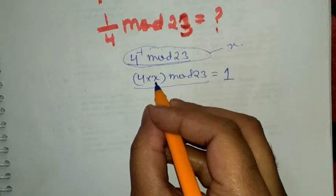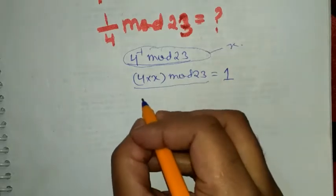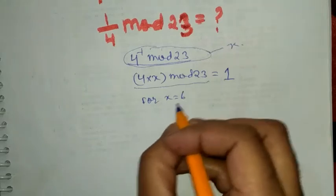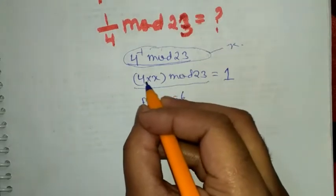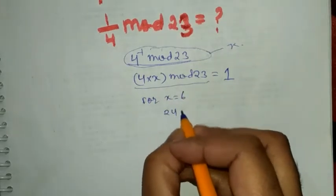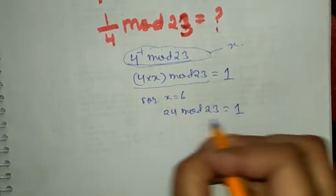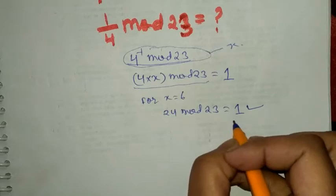So if you put x equals to 6, 4 into 6 is 24 mod 23, which is 1. It's satisfied.